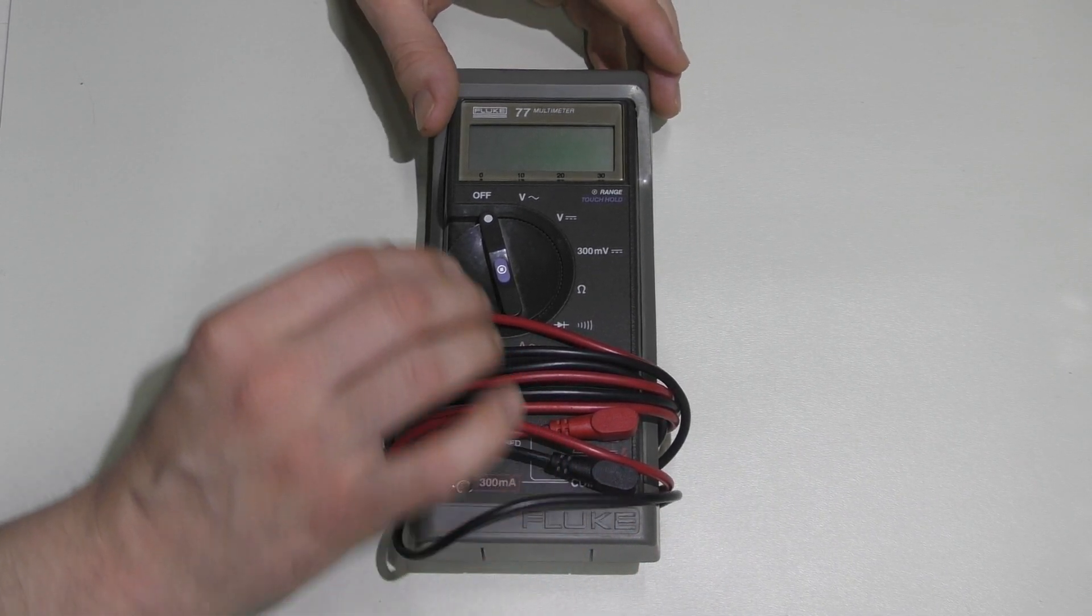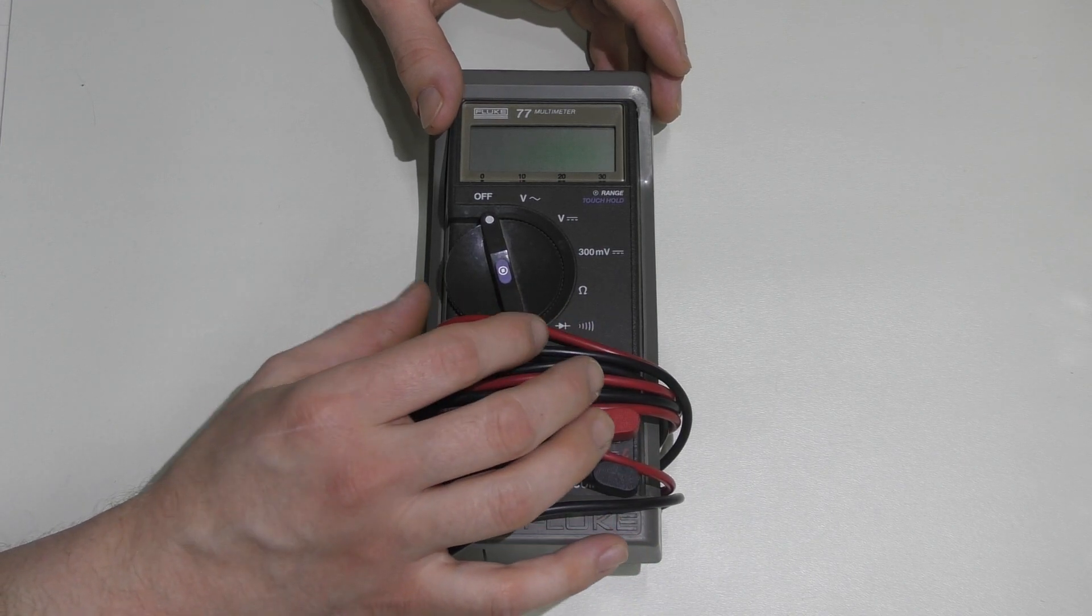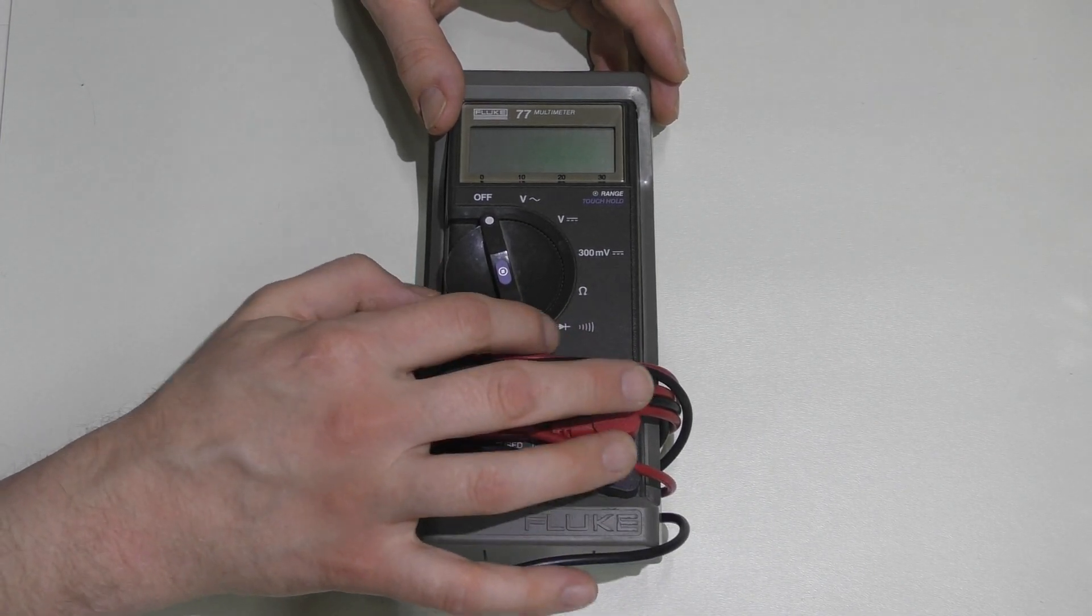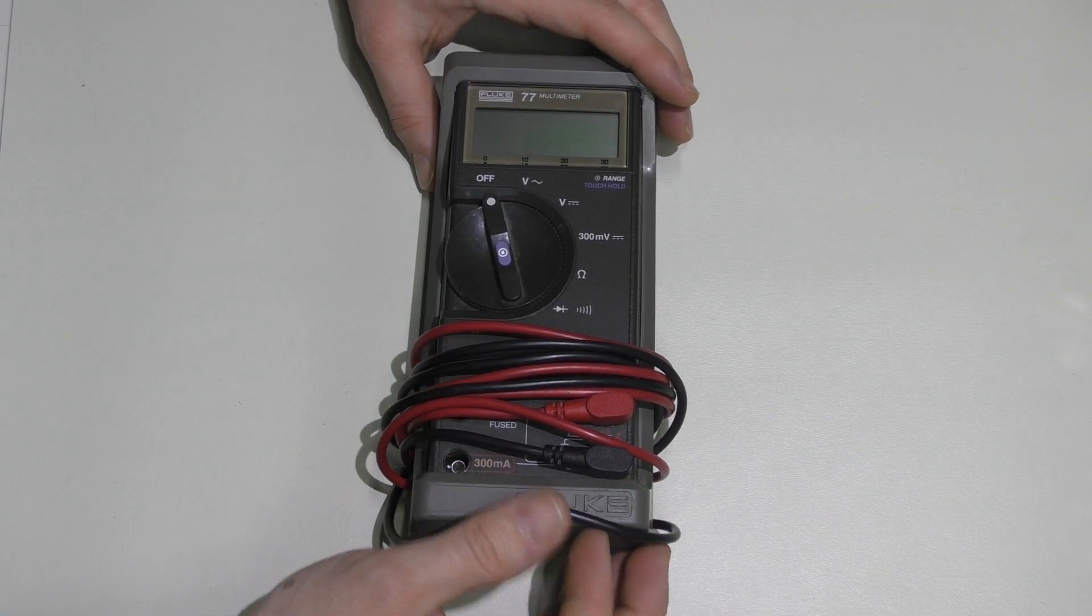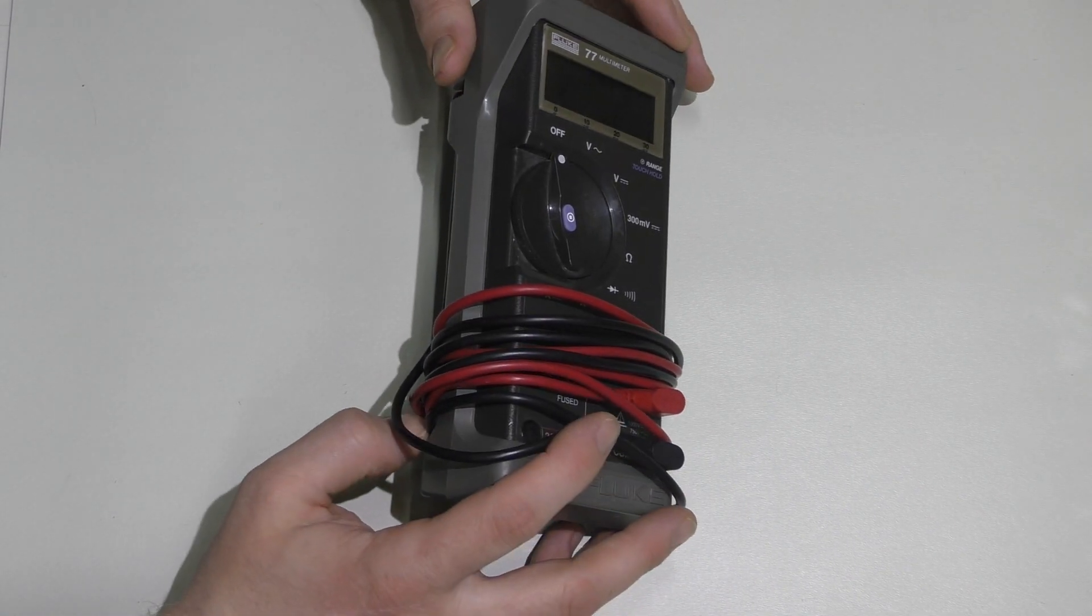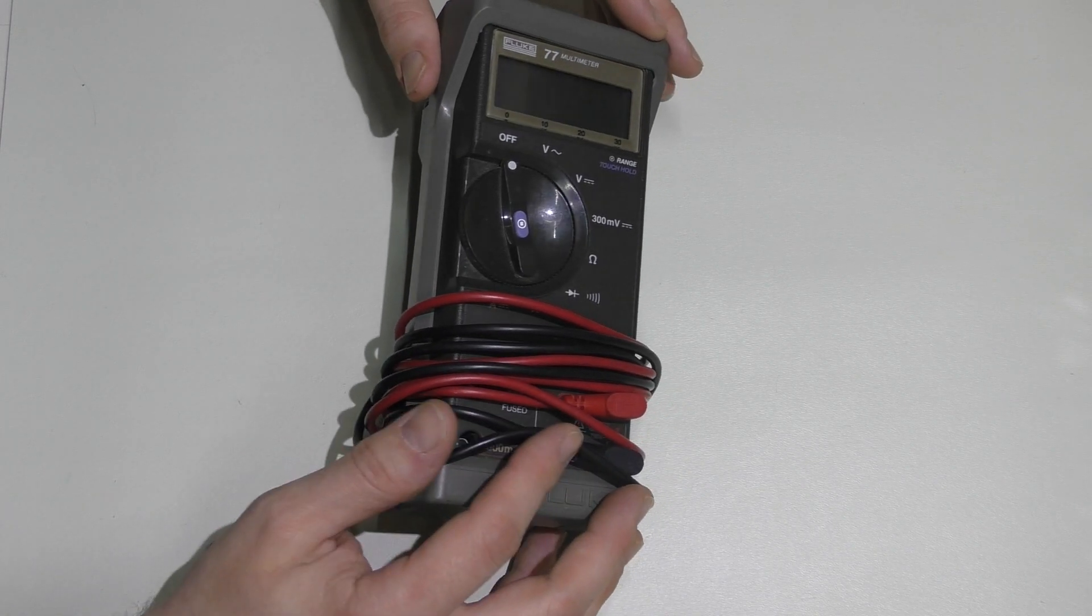This one here is just a standard volt, ohm, and amperage meter, and it does have the diode and continuity tester on it.